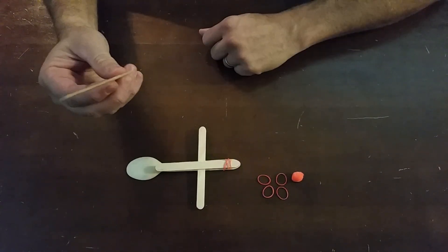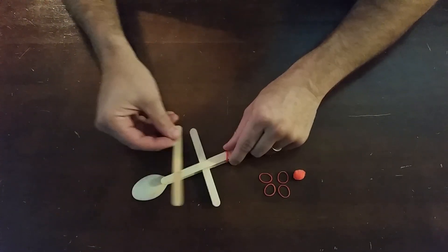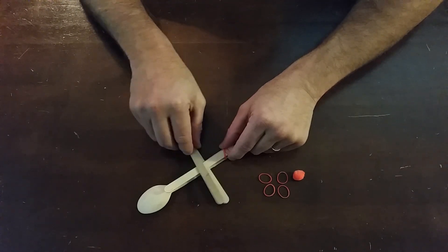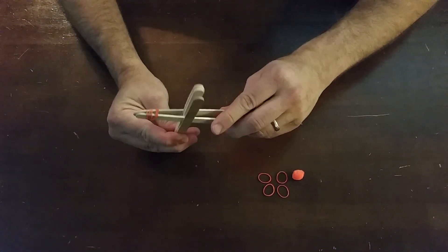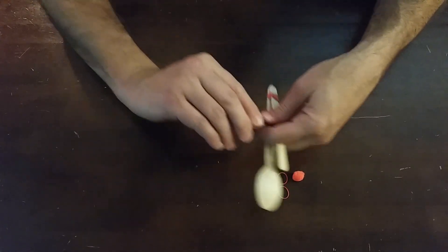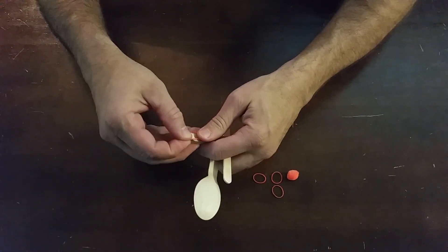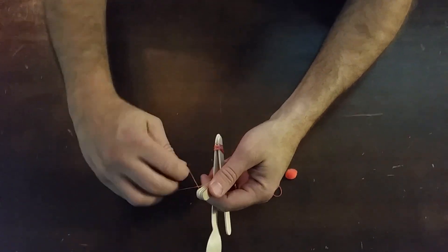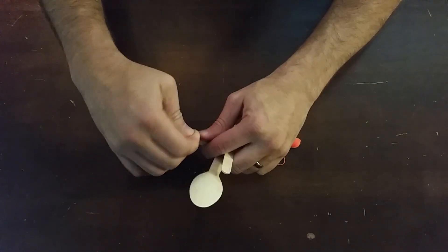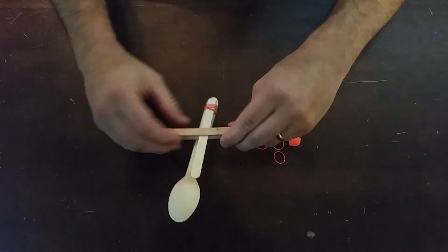Then we're going to take the last stick and place it on top of those, so it's underneath the entire catapult here. Next, we're going to take one of the rubber bands and we're going to again go like this: twist and around, and twist and around on one side to hold that together.